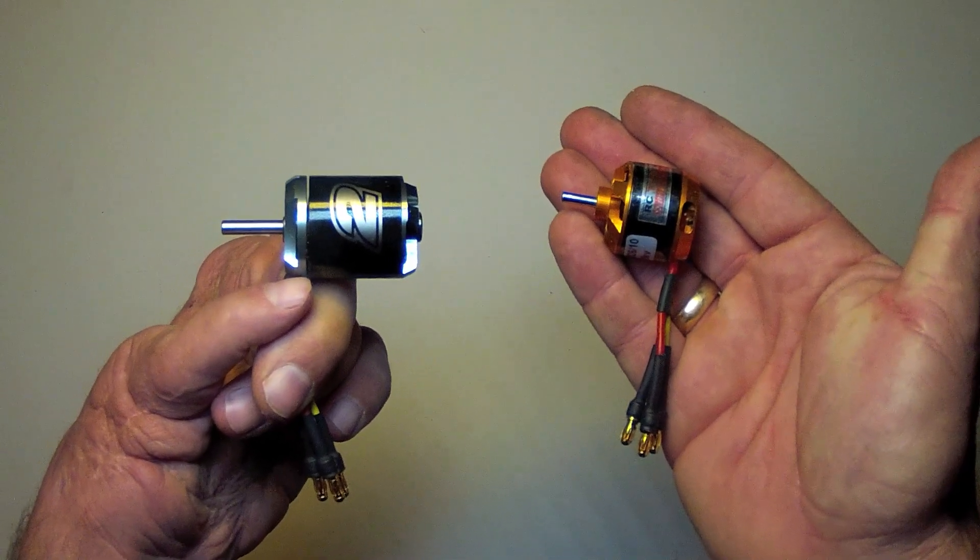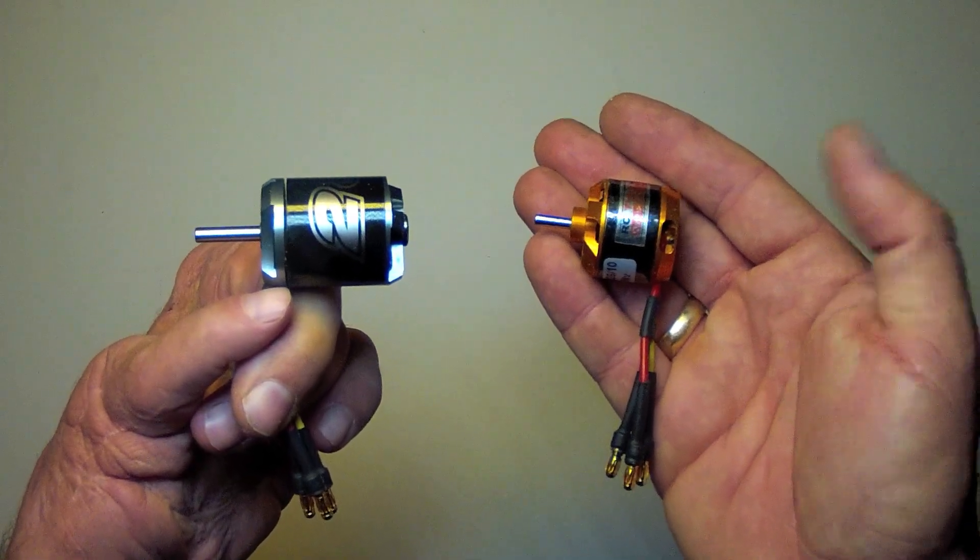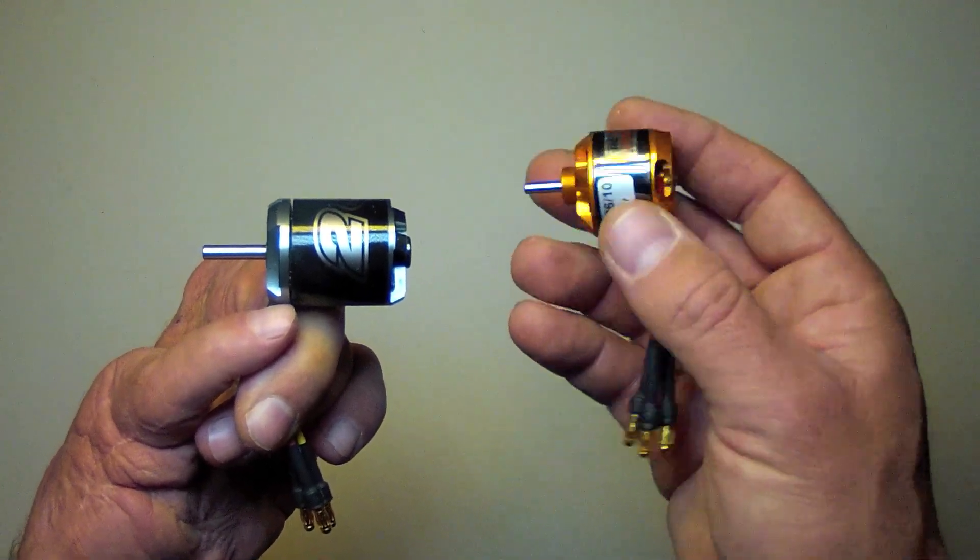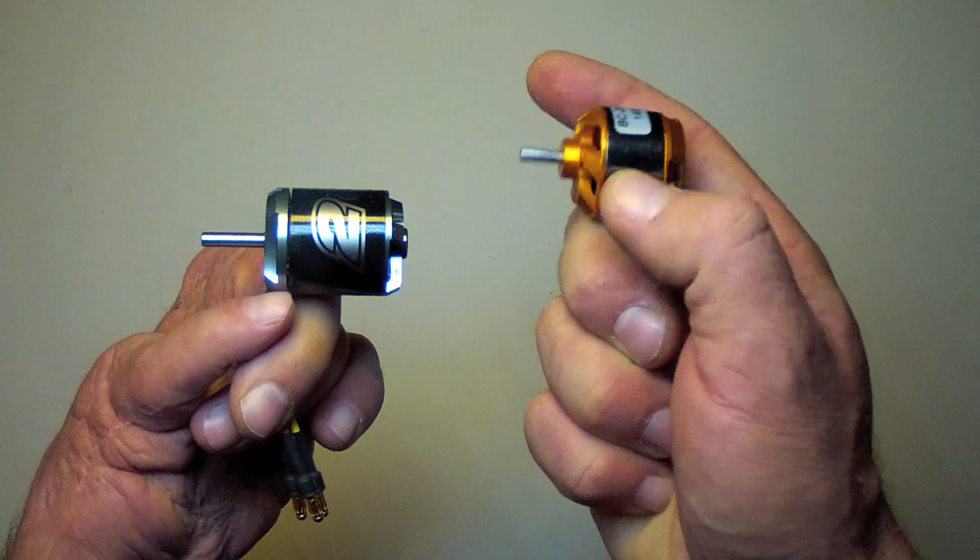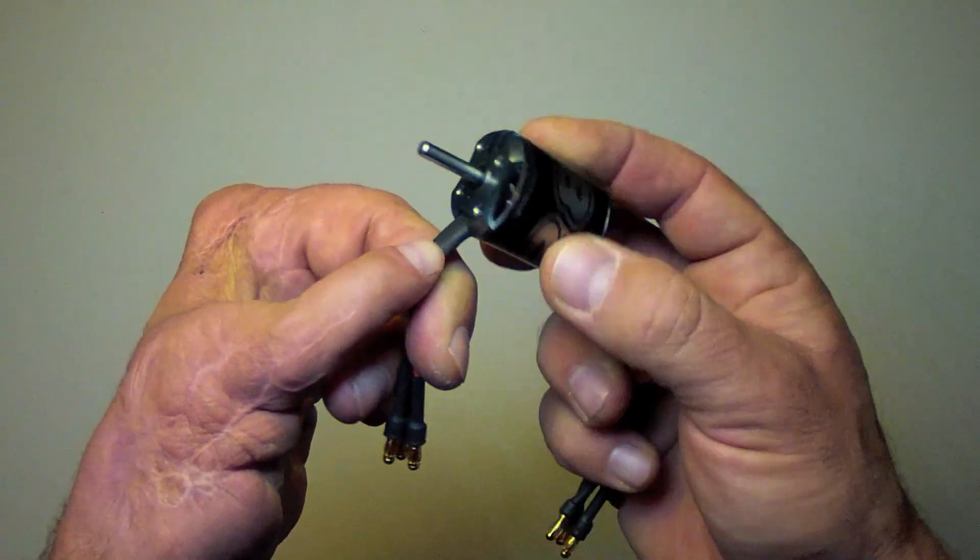Your choice of motor mount and the installation technique depends partly on whether your motor has the shaft protruding from the can side of the motor or through the base side of the motor.